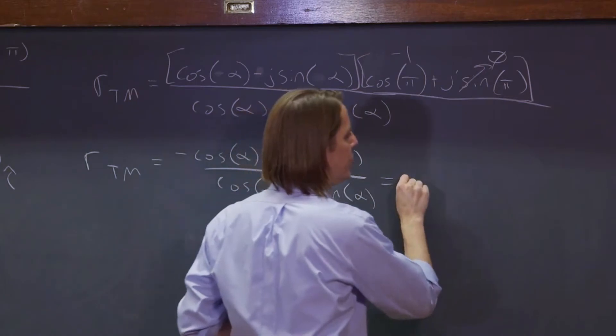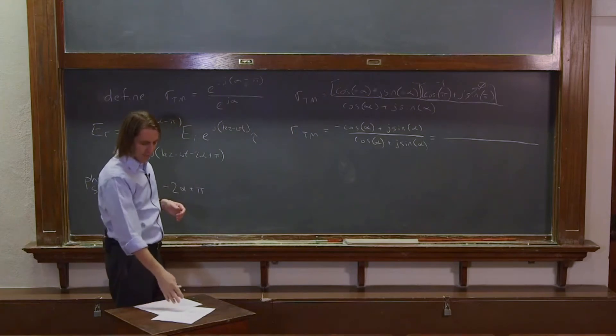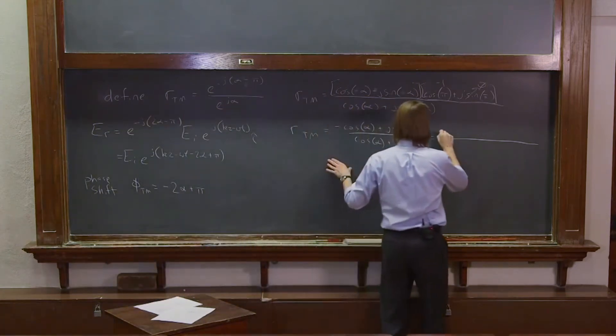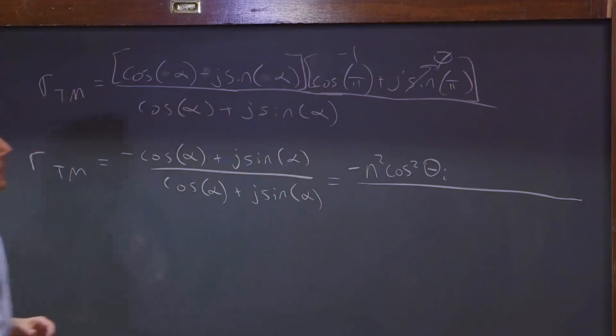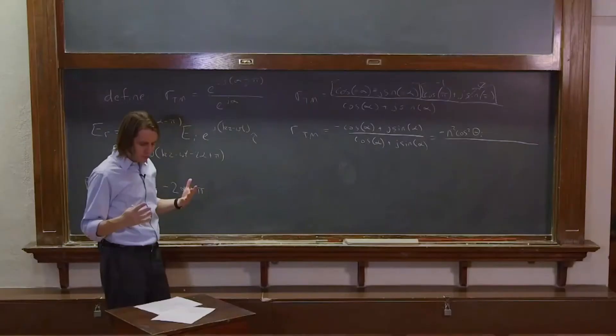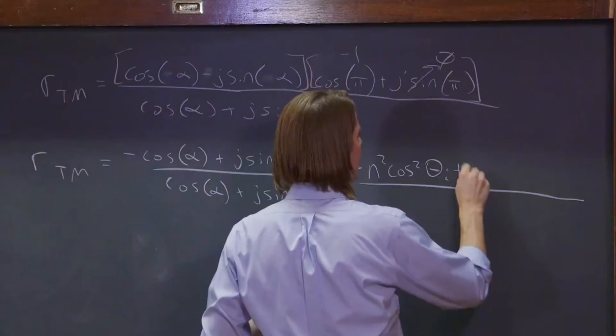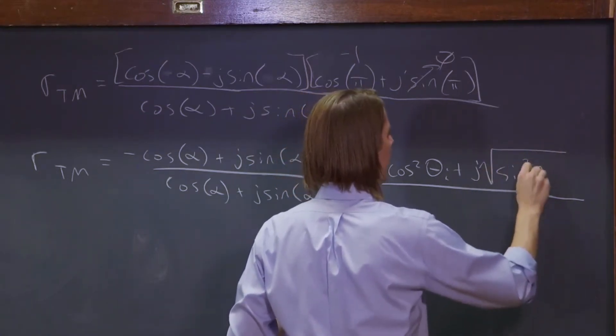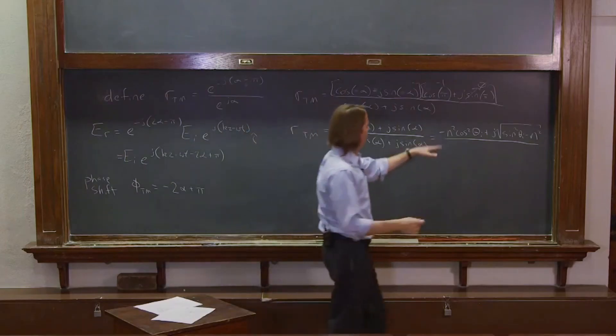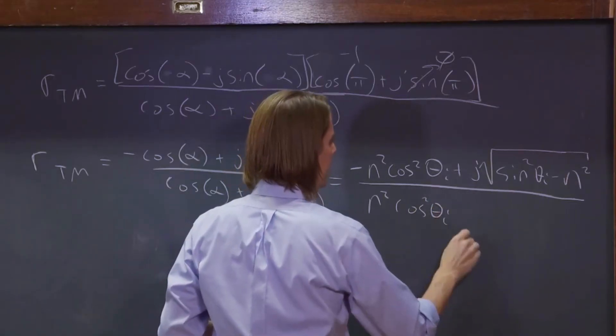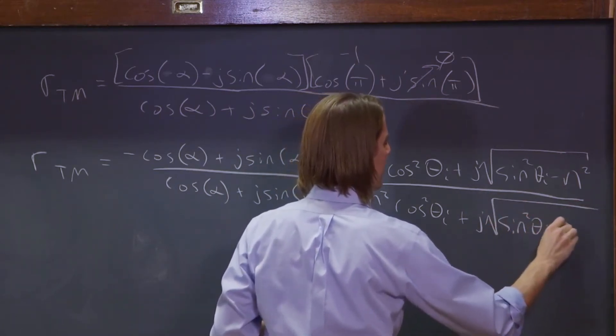And if you think back to your previous definition of RTM, it had n squared cosine theta i. And it had a negative here, n squared cosine theta i. And then it had the square root of this thing that could go imaginary on us, the square root of n squared minus sine squared theta. We're going to do the same thing. We're going to go ahead and pull out a j and say plus j times the square root. And we're going to turn around sine squared theta i minus n squared. And the bottom looked similar.